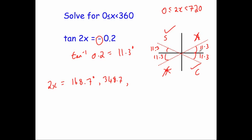Going around again, the next solution is 540 minus 11.3, which equals 528.7 degrees. Our final solution is 720 minus 11.3, which equals 708.7 degrees. So we've found our four angles for 2x.